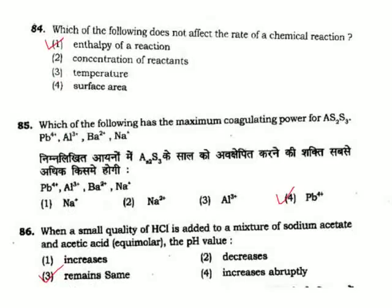Question 84: Which of the following does not affect the rate of a chemical reaction — concentration, temperature, and surface area all affect the rate, but the enthalpy of a reaction does not affect it. Correct answer is Option 1. Question 85: Which of the following has maximum coagulating power for As₂S₃ — the correct answer is lead⁴⁺. Option 4.